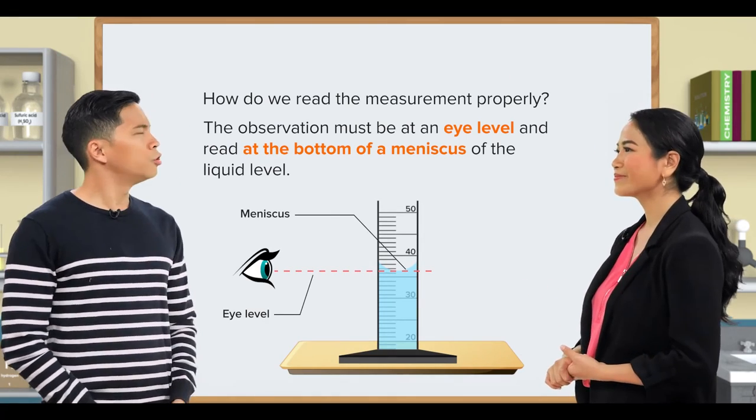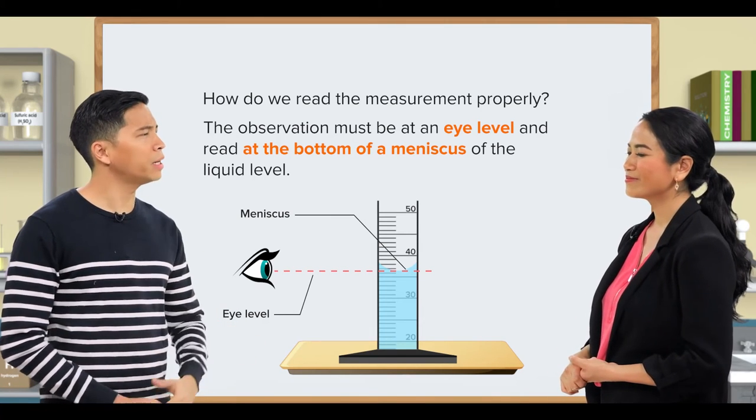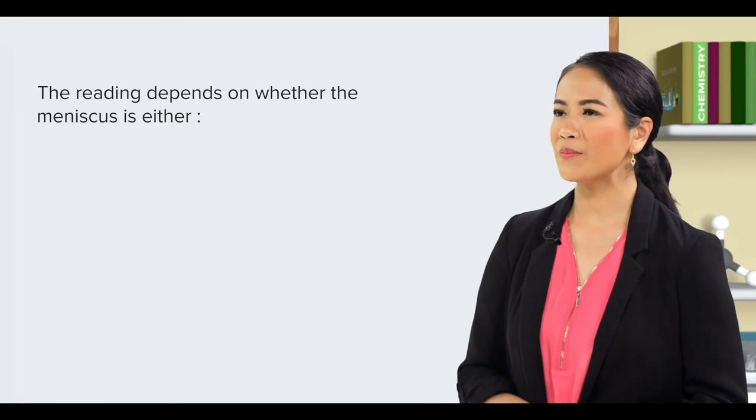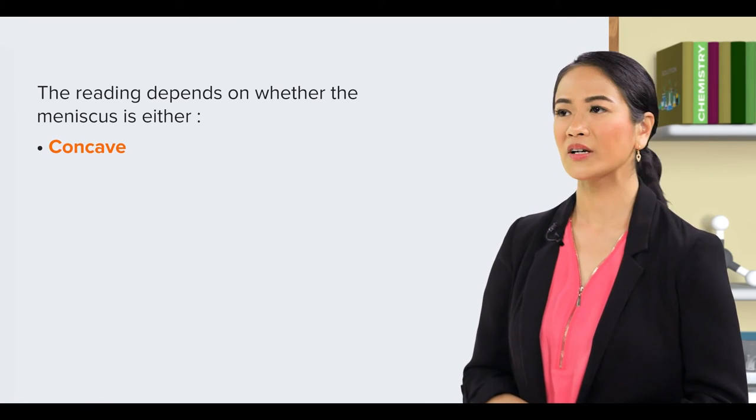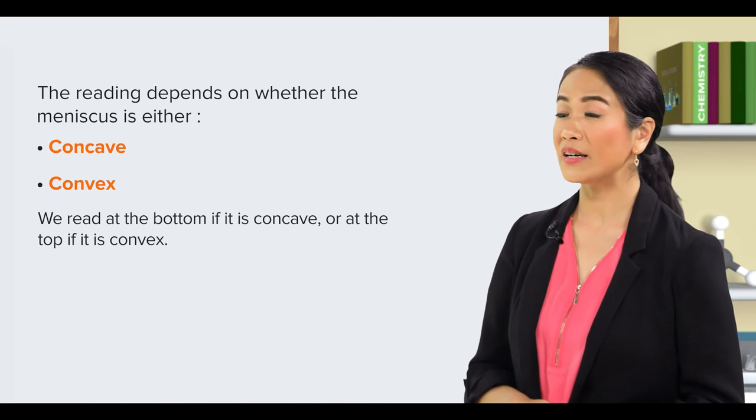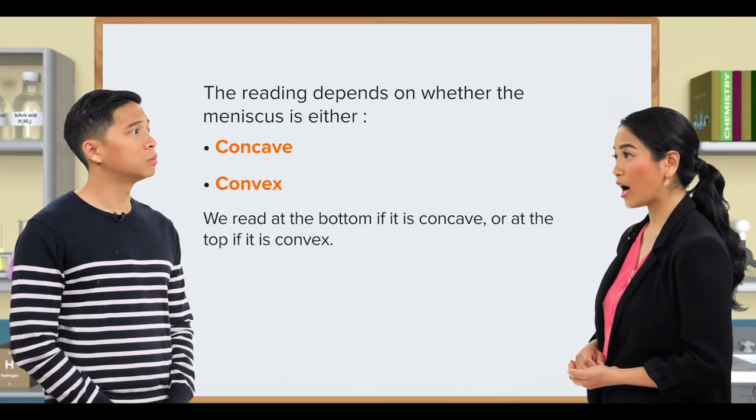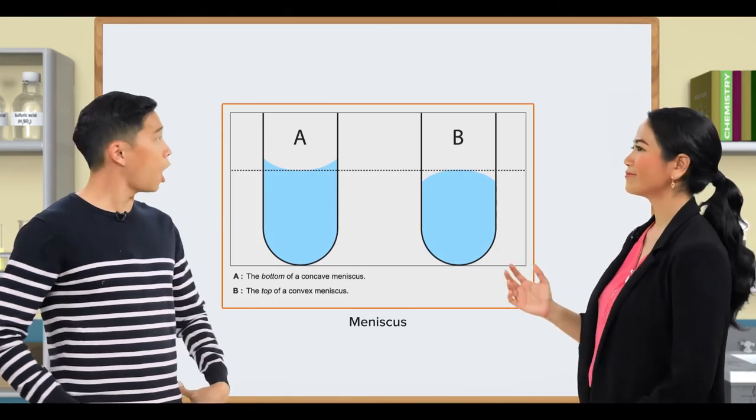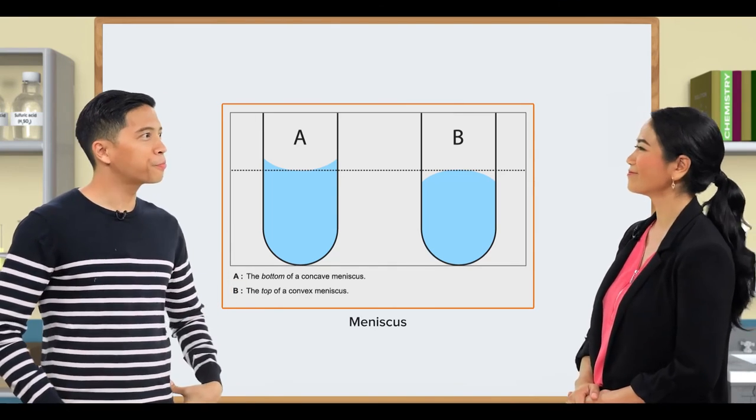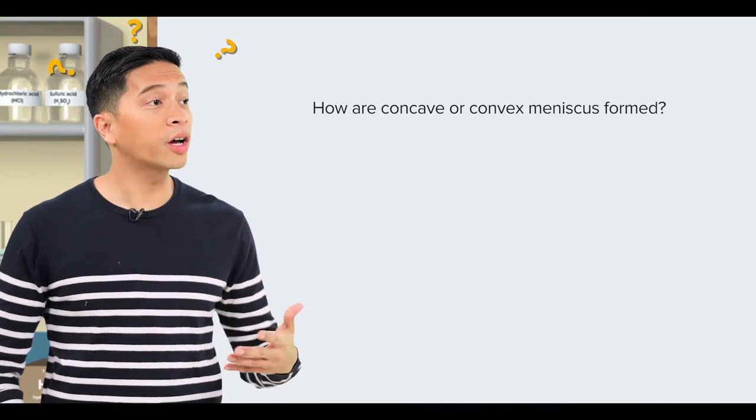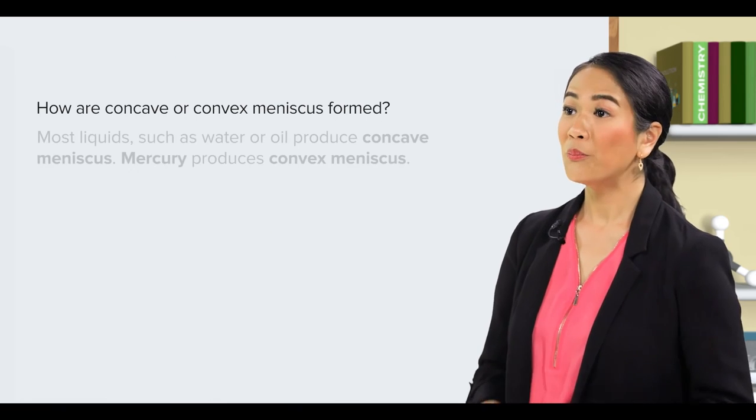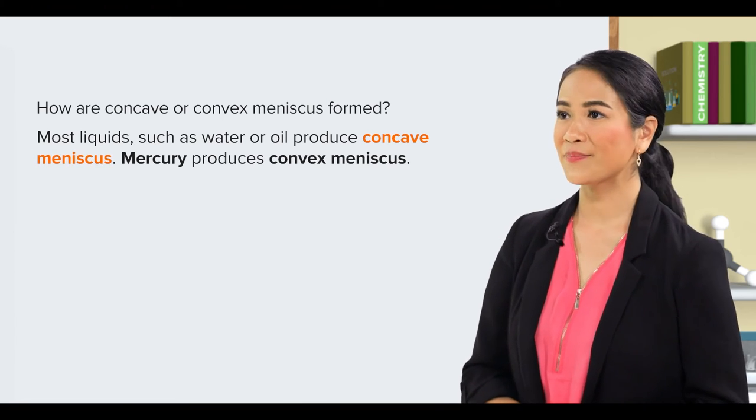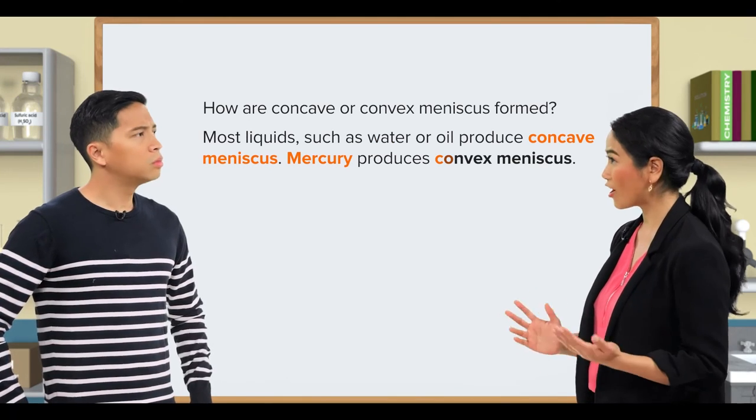Do we always read at the bottom of the meniscus? Well, actually, it depends on whether the meniscus is concave or convex. We read at the bottom if it is concave or at the top if it is convex, like this. Wow, that's so interesting. How are concave or convex meniscus formed? Well, most liquids such as water or oil produce concave meniscus. Mercury produces convex meniscus.